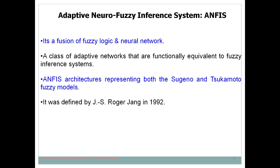After applying the rules from the knowledge base, we get an output in fuzzy value. Since human beings need a crisp value, defuzzification is applied. Multiple rules generate their own outputs, which are combined to produce a final crisp output. This is how the fuzzy inference system works.